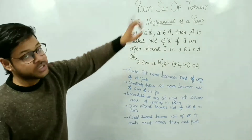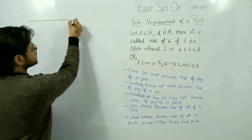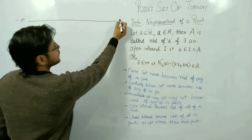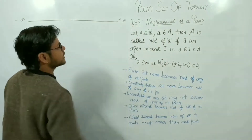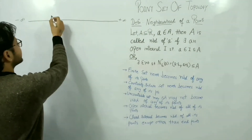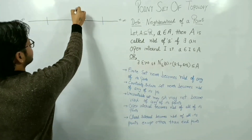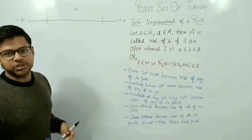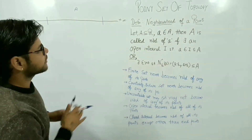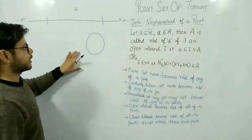Since we are studying point set topology in the real line, let us visualize it. We set the real line where we have minus infinity to plus infinity. A is a set on the real line.